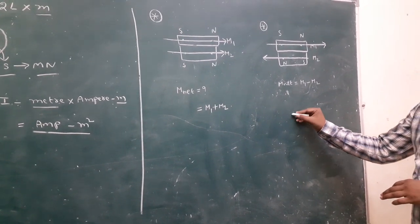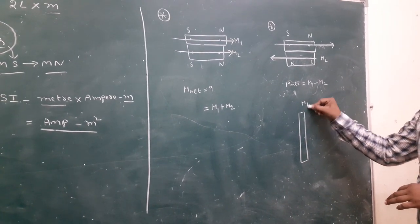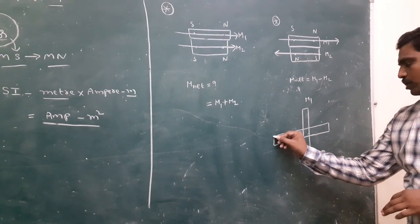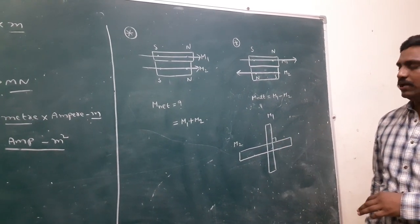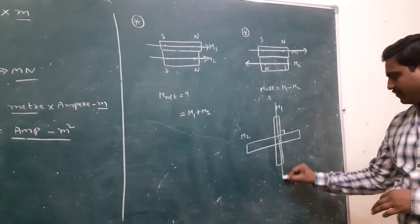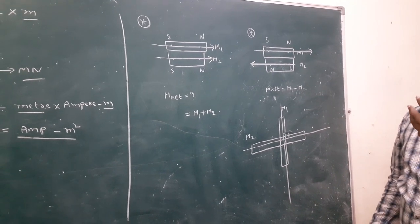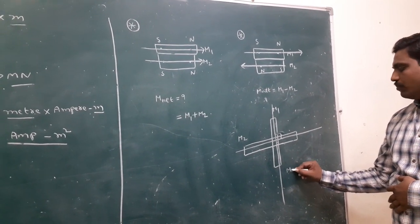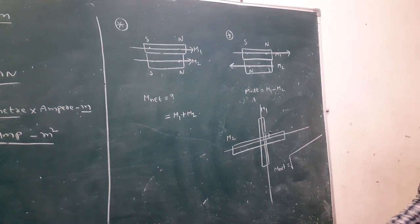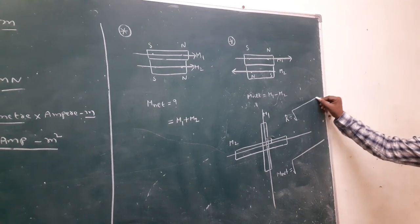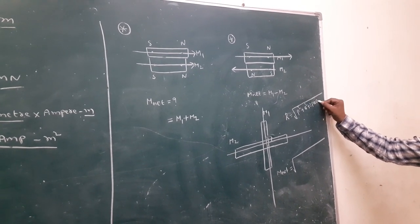Next diagram: here is one magnet with moment M1, and another magnet with moment M2. These two magnets are perpendicular — their axes are perpendicular to each other. To determine the total or resultant magnetic moment when magnets are perpendicular, we apply the parallelogram law. The resultant formula is R equals under root of P² plus Q² plus 2PQ cos theta.